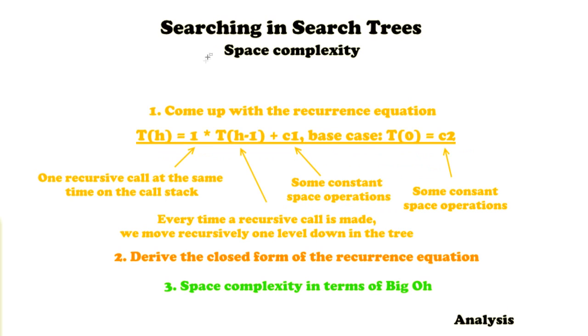So let's just start with the first step. The recurrence equation will look like this: T(h) = 1 × T(h-1) + c1, and the base case will be c2, in which c1 and c2 are constants. There is a 1 in front of T(h-1) because only one recursive call at the same time is on the call stack.